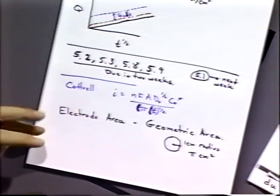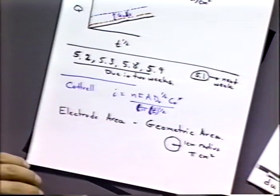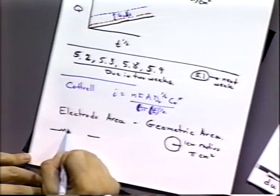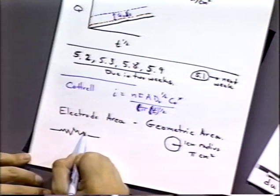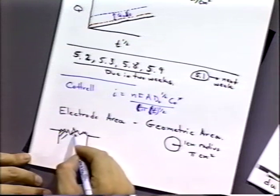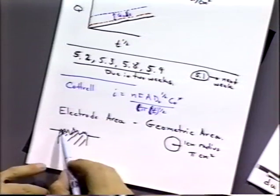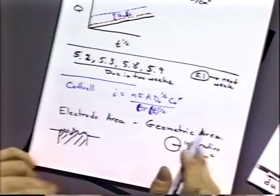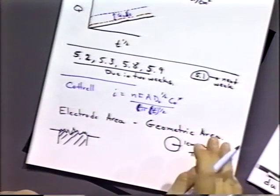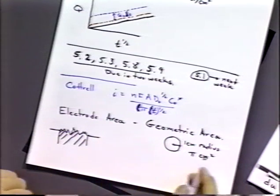That's a geometric area. But if actually we looked at that electrode, perhaps it's not so simple because we could think about that electrode being microscopically rough. Depending on how well we've made our electrode and how well we've polished it, we might expect that at very short time scales, the electrode area could be much larger than the actual geometric area.